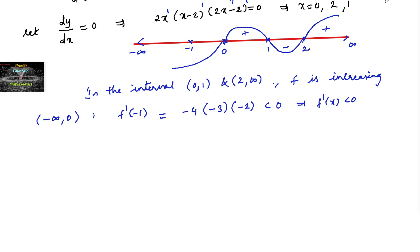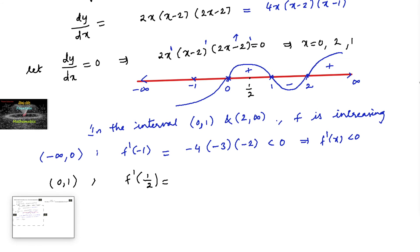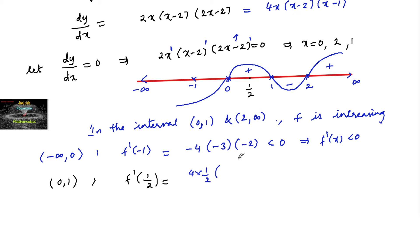For the interval (0, 1), take x = 1/2: f'(1/2) = 4·(1/2)·(1/2 - 2)·(1/2 - 1) = 4·(1/2)·(-3/2)·(-1/2). Minus times minus gives positive, so f'(x) > 0 — the function is increasing on (0, 1).